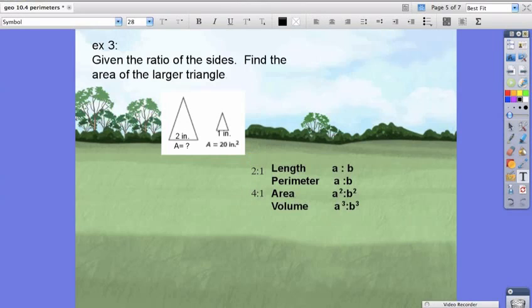So now, we have to look at the ratios of the larger triangle to the smaller triangle. The area of the larger triangle is x, because we don't know what it is. The ratio of the smaller triangle is 20.